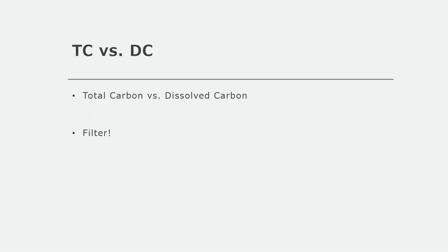When we compare TC and DC, or TOC and DOC, we're talking about total versus dissolved components — so total carbon, dissolved carbon, total organic carbon, dissolved organic carbon, etc. This is entirely a matter of sample prep. If you want to measure total carbon, don't filter your samples. If you want to measure dissolved carbon, filter them. Filtering will remove any particulates or solids and make sure that the only thing that gets measured is dissolved. So keep that in mind before you choose to measure anything else.